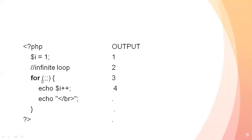This creates an infinite for loop where there is no initialization, no condition applied, and no increment specified inside the loop header. Because I have not set any final condition or termination, the value of $i will keep incrementing and print 1, 2, 3, 4, 5, 6, 7, 8, 9 and so on infinitely. This is my for loop example — I hope you are getting it well.